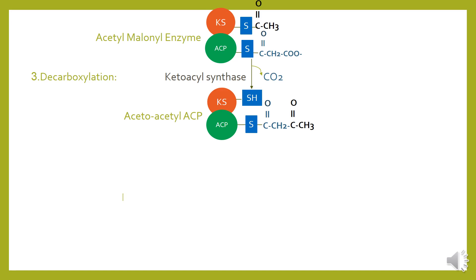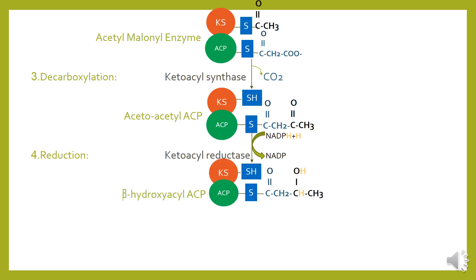Fourth step mein is ki reduction hogi in the presence of enzyme ketoacyl reductase, jis ke dauran NADPH + H⁺ convert honge NADP⁺ mein. Aur yeh hydrogen atoms add ho jaye nge acetyl-ACP ke saath, jis se yeh beta-hydroxy acyl-ACP kahlaye ga.